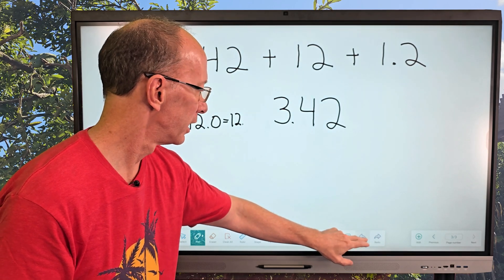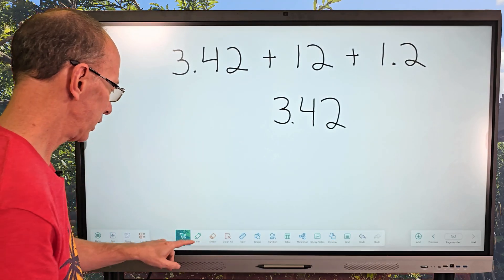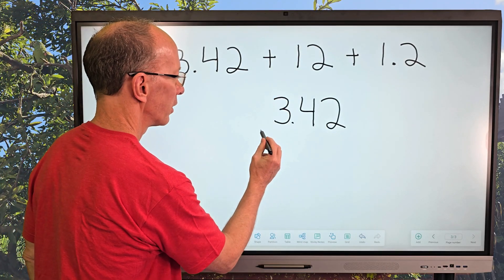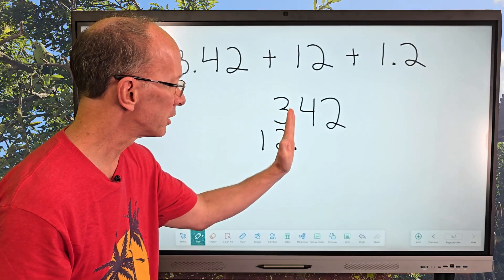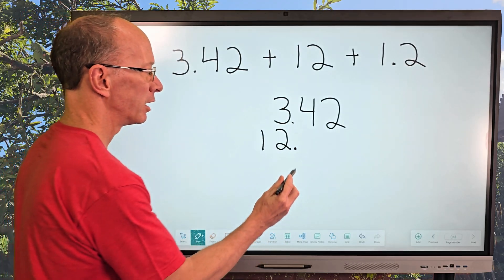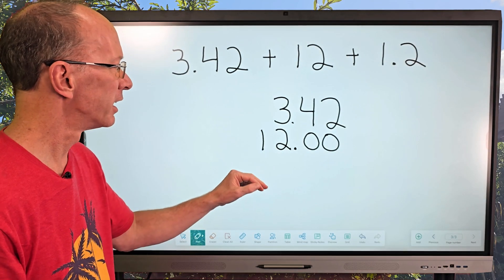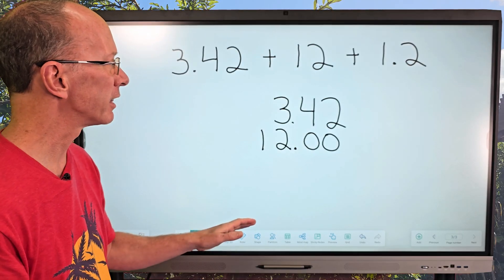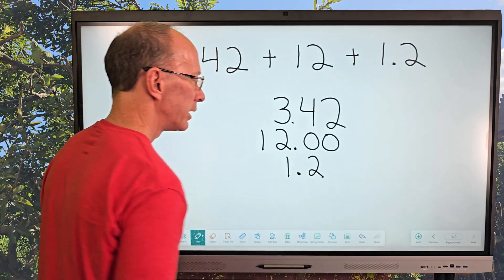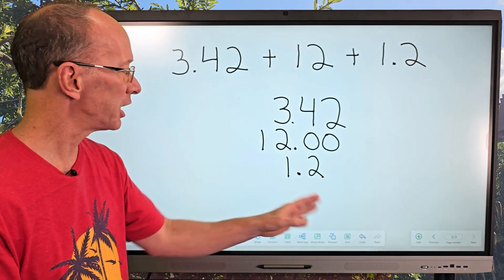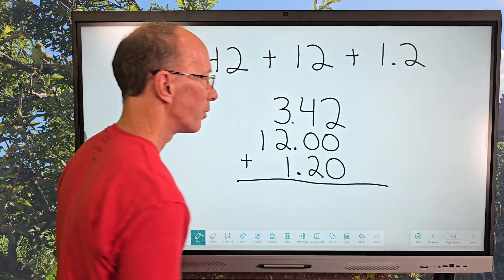Knowing that I can put a decimal on the end allows me to line this up. I'll put 12 right here with the decimal point lined up — when you add numbers with decimal points, make sure it's all lined up nice and straight. Then I'll add my zeros as place holders. And we also have 1.2, so I'll put 1.20 — adding that zero isn't changing the value. Then I'll put my addition sign, and now I am ready to add.